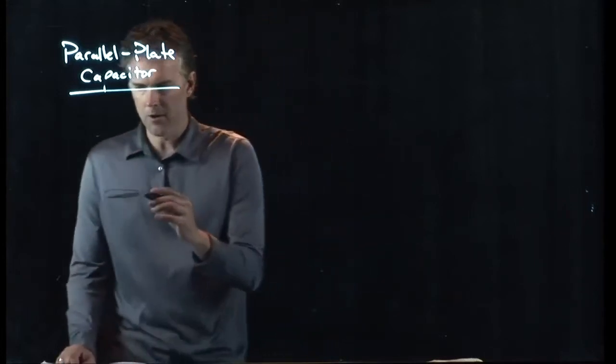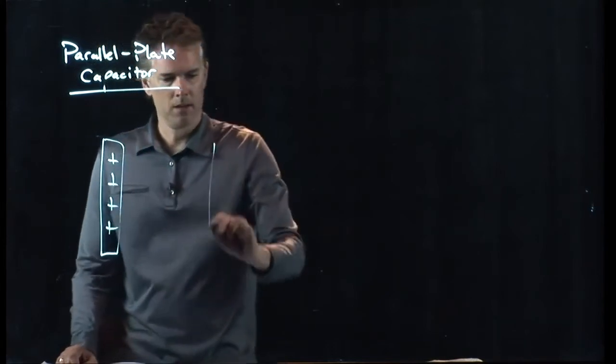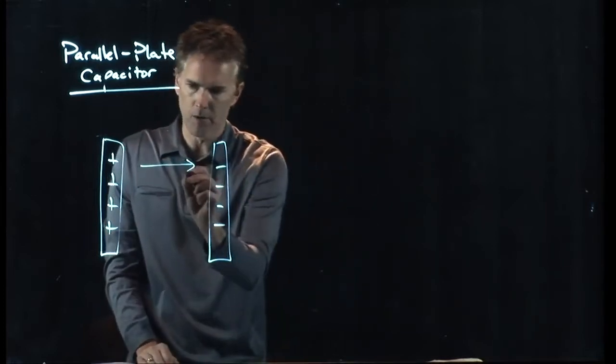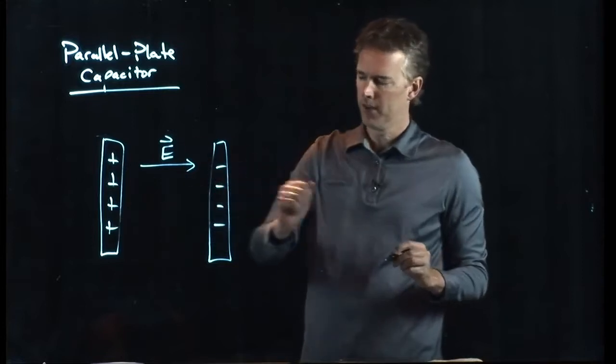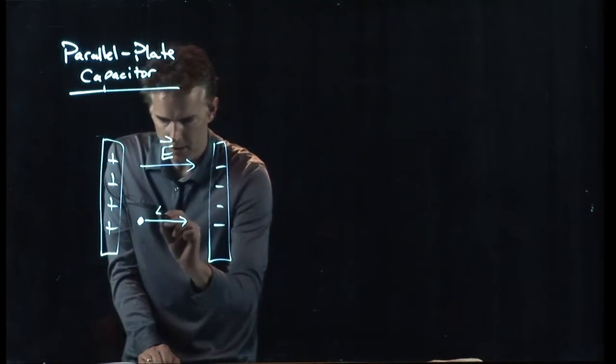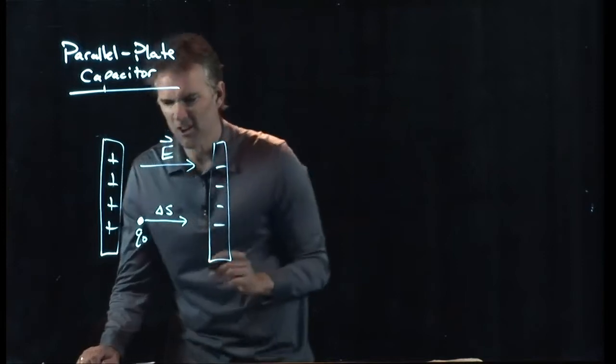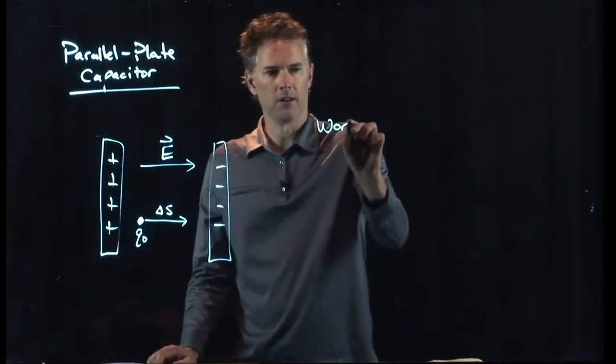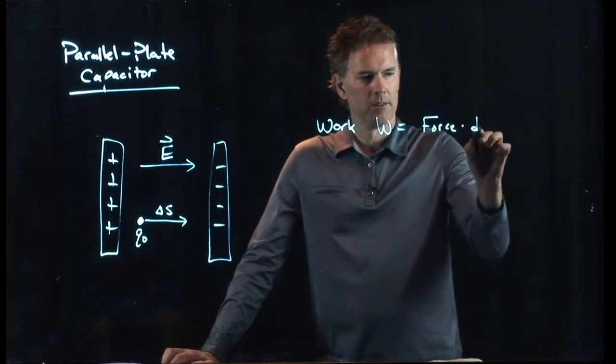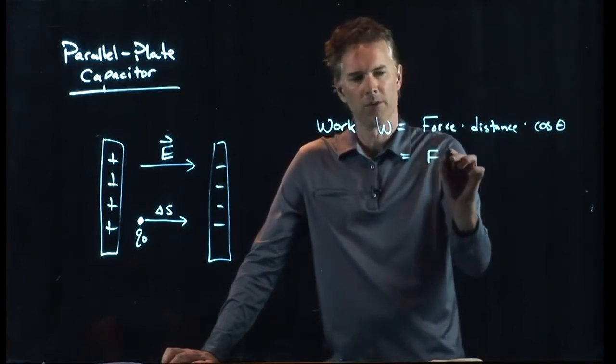So let's do the following. Let's draw our parallel plate capacitor again. We'll draw the cross-sectional view, not the 3D view. And let's do it like this. I have positives on the left. I have negatives on the right. There is, therefore, an electric field that is pointing from the positive to the negative. If I put a charge in there and it moves a distance, let's call it delta S, charge Q. What is, and let's call it Q naught, that's our test charge. What is the work that is done on it?